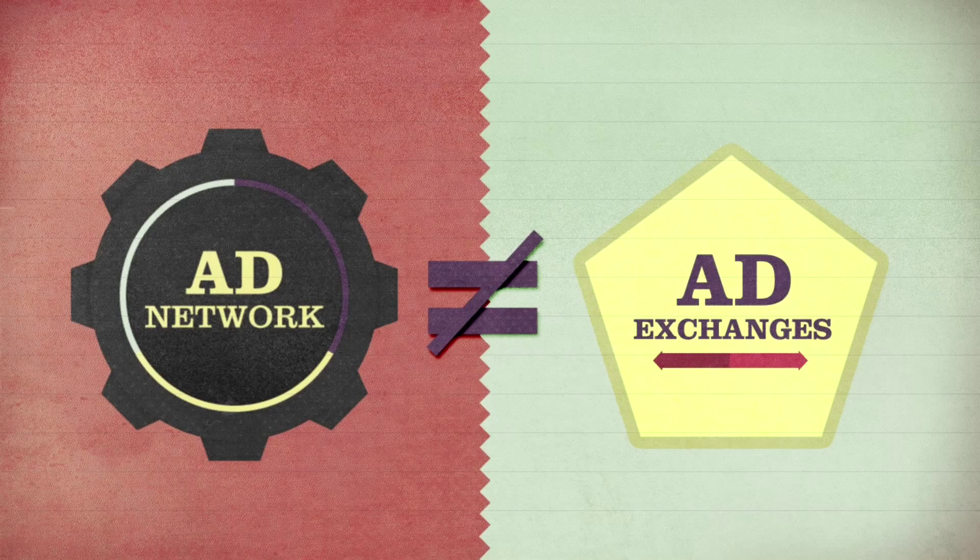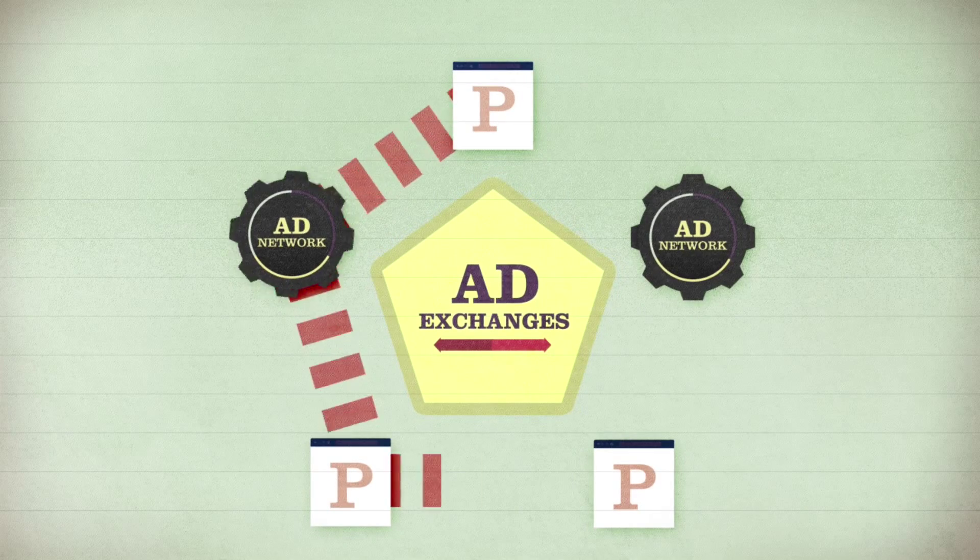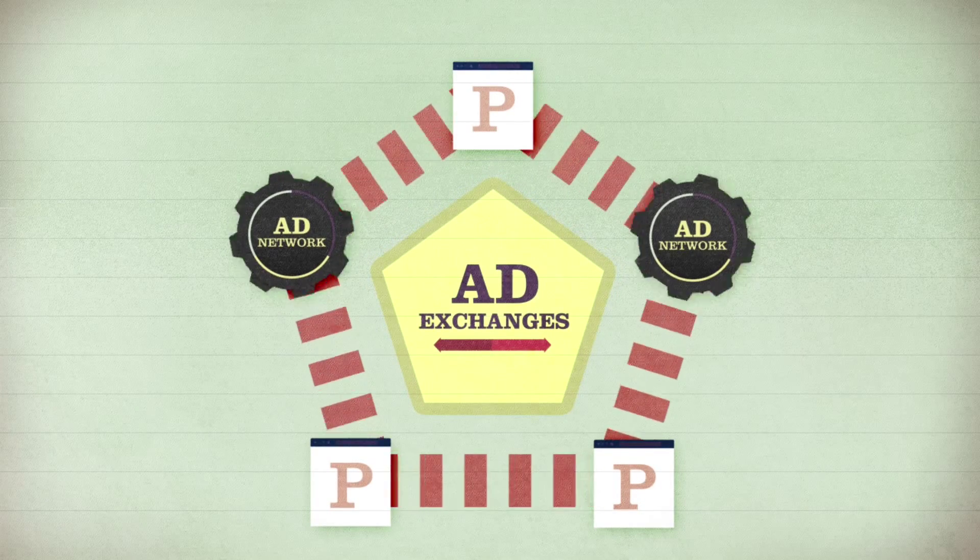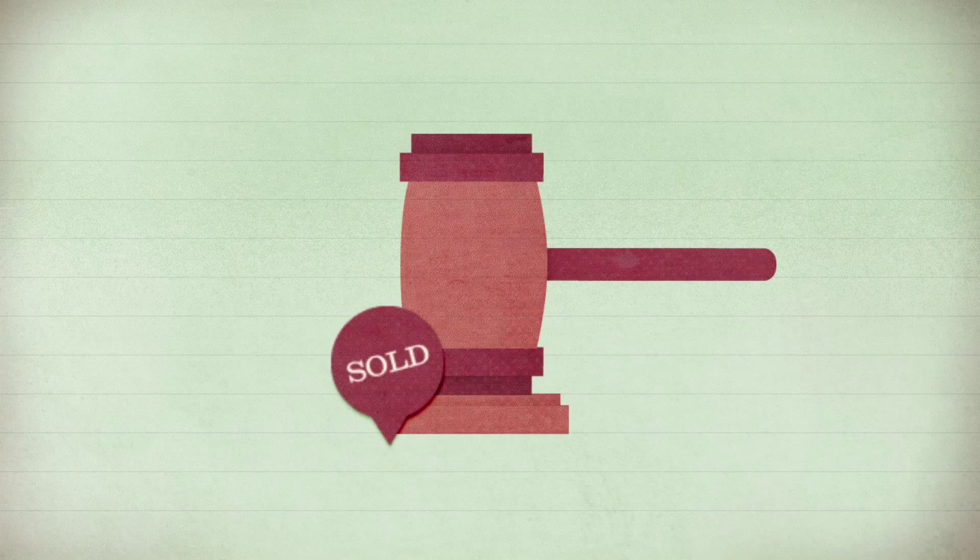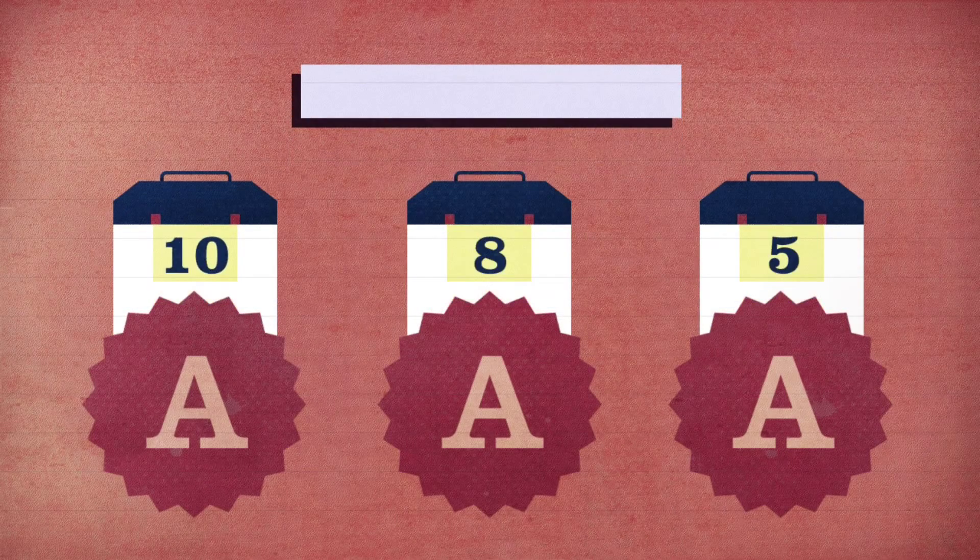An ad exchange allows the automated buying and selling of inventory across multiple ad networks and publishers. Super-duper high-tech software creates an auction for online ad impressions. Different advertisers can try to outbid each other for a spot on a website by entering a predetermined dollar amount in their DSP.